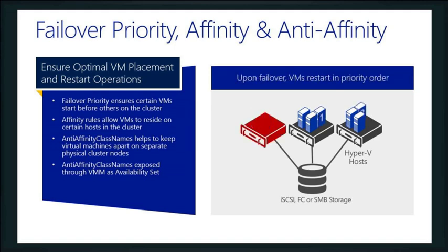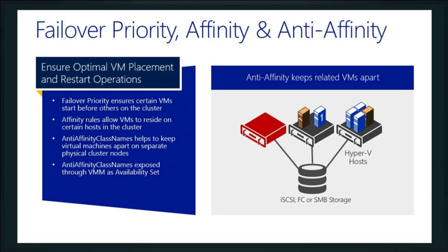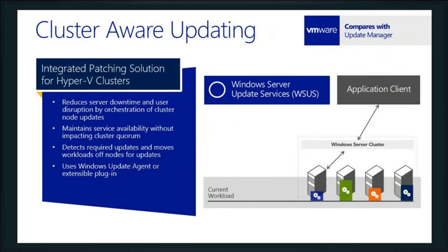If we have a restart priority order and have to restart on a node, we can say who starts first. For example, we might want the back-end server to come up before the front-end server in a two-tiered application. Anti-affinity rules say these two servers can't be together — because if both nodes go down, it kills the entire application. It keeps those VMs apart. Affinity rules allow them to run together when desired.